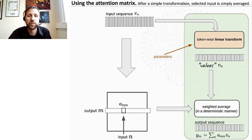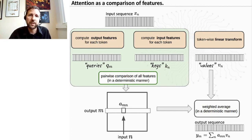So now how do we compute this attention matrix? The way we do it is that from the input we compute output features that we call queries, and input features that we call keys. For each of the sequence tokens, we compute a query and a key. And the attention matrix is simply computed as a pairwise comparison of all the queries and the keys in a deterministic manner. So we have parameters to compute these features, these queries, these keys, and values, but then all the rest flows deterministically. We just compare those queries and keys. And then when it's done, we weight the values and we get the output.